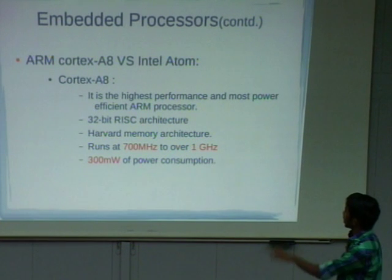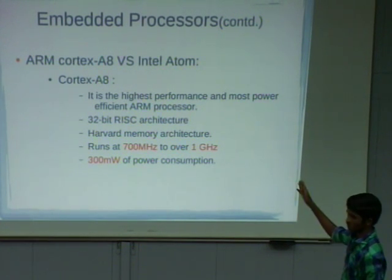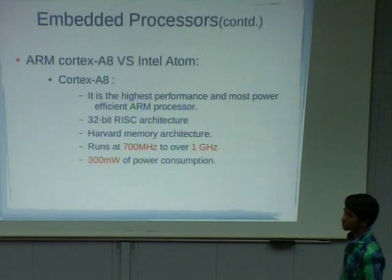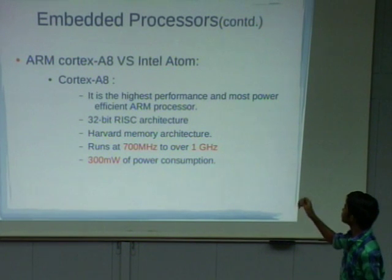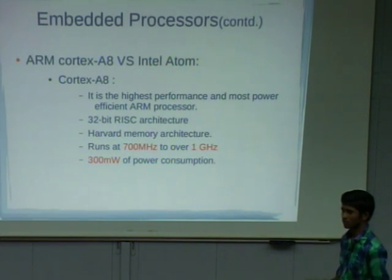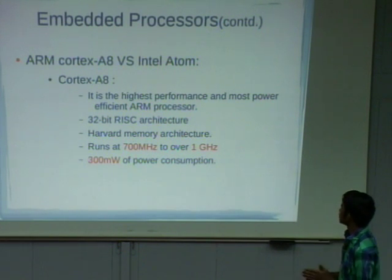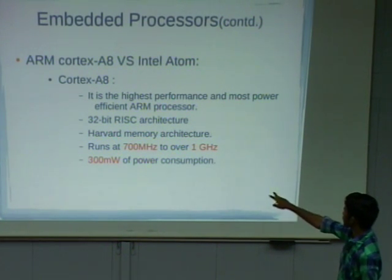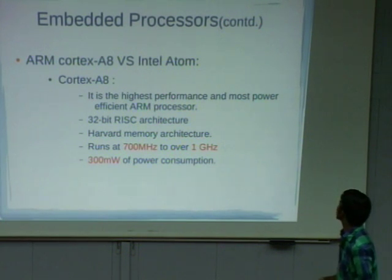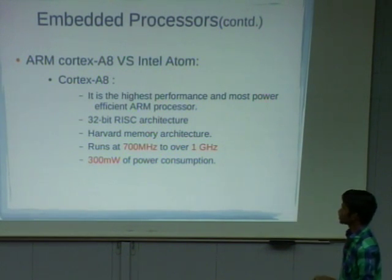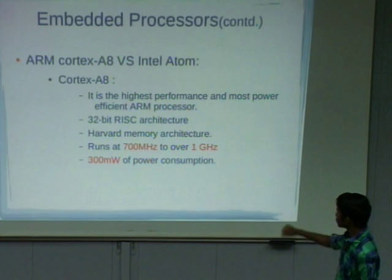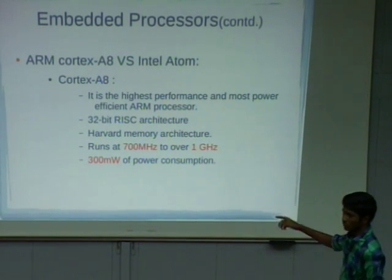Now we compare the Akash processor with Intel Atom, where Intel Atom is based on x86 architecture. Coming to the Cortex-A8 used in the Akash tablet: out of all available ARM processors, this has the highest performance and is the most power efficient. It uses 32-bit architecture and Harvard cache design. The frequency ranges from 700 MHz to 1 GHz. Power consumption is 300 milliwatts per second, which is very low compared to Intel Atom.